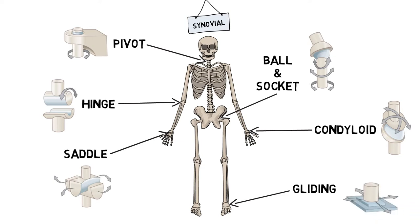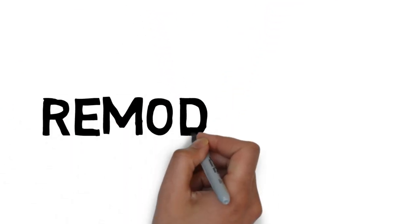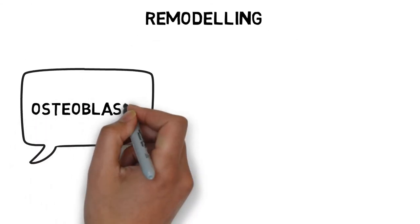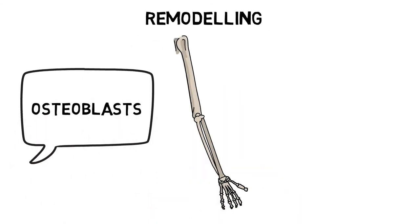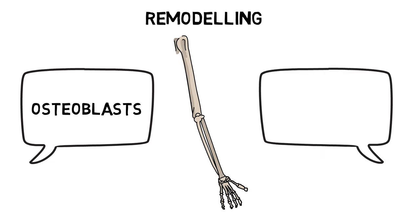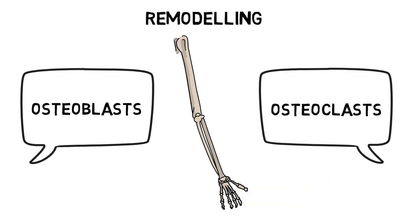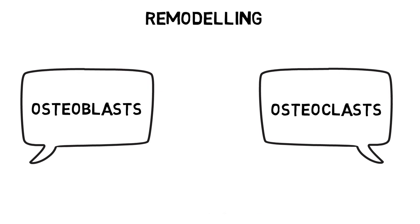The body is in a constant process of making new bone, called remodeling. Osteoblasts are cells that lay down new bone tissue, while osteoclasts are cells that break down and remove old bone.